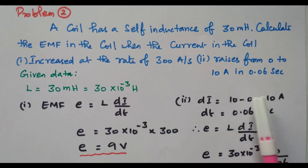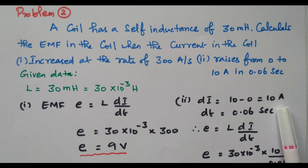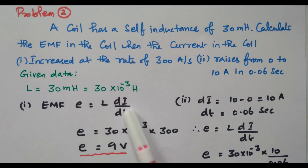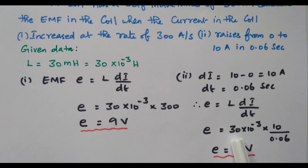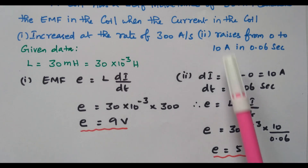Now we go to the second case. The current is increased from 0 to 10 ampere, so di = 10 − 0 = 10 ampere. The time dt = 0.06 second. Here di and dt are given separately. So E = L × di/dt = 30 × 10⁻³ × 10 / 0.06 = 5 volts. For the second case, the EMF induced is 5 volts.